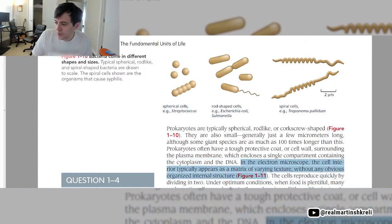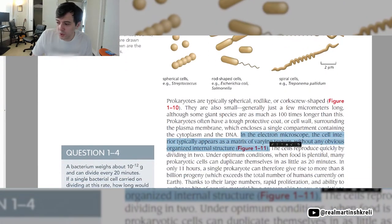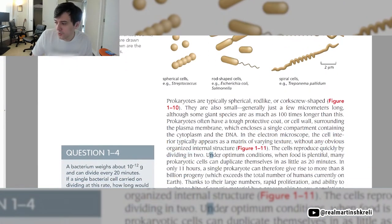In the electron microscope, the cell interior typically appears as a matrix of varying texture without any obvious organized internal structure. The cells reproduce quickly by dividing in two. Under optimum conditions, when food is plentiful, many prokaryotic cells can duplicate themselves in as little as 20 minutes.